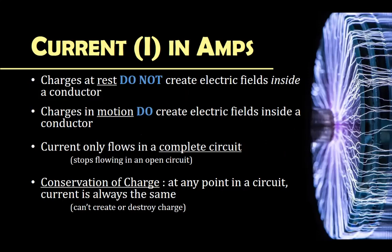Charges at rest do not create electric fields inside of a conductor. Charges in motion, however, do create electric fields inside a conductor. So when you flip on the light switch, you are causing the movement of electrons, which do have an electric field. Current only flows in a complete circuit and stops flowing when the circuit is open. When you flip on the switch, it closes that circuit, allowing the electricity to flow through it, and you see current.